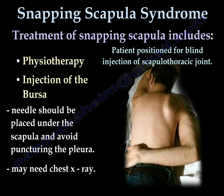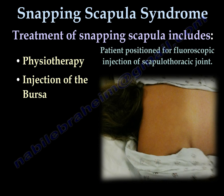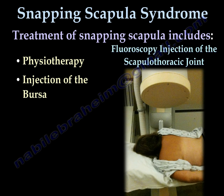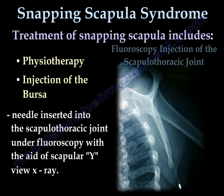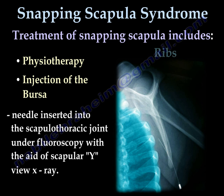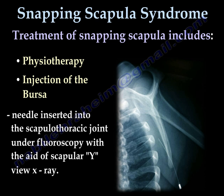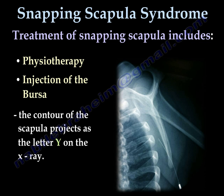This is a picture of a patient positioned for a blind injection of the scapulothoracic joint. This is a patient positioned for fluoroscopic injection of the scapulothoracic joint. You can see the position of the fluoroscopy machine preparing for injection of the scapulothoracic joint, allowing us to get a Y-view of the scapula. The needle is inserted into the scapulothoracic joint under fluoroscopy with the aid of the scapular Y-view x-ray. You must obtain a contour of the scapula that projects as a Y-view on the x-ray and is separated from the ribs, then inject between both under the scapula.